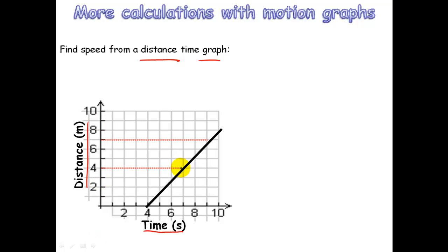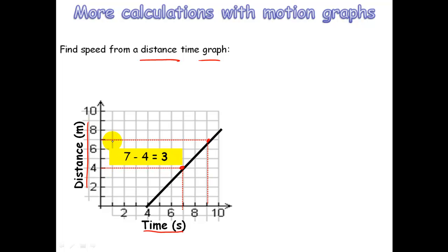Draw them straight out until they reach the line, then draw directly down from that point. Now measure the size of the change in y — it's gone from 7 to 4, so 7 minus 4 gives us 3; this is 3 for the change in y. From 7 to 9 is 2, so 9 minus 7 gives the change in x.